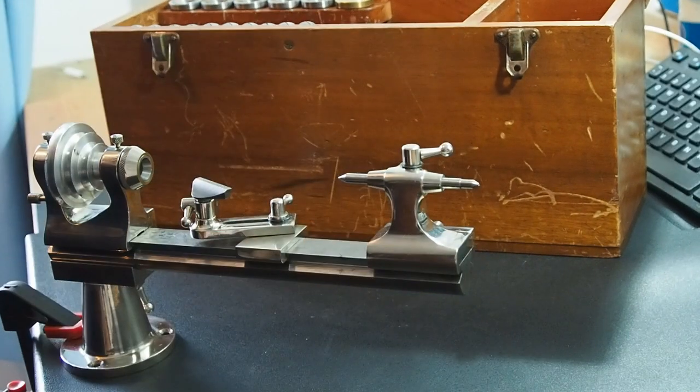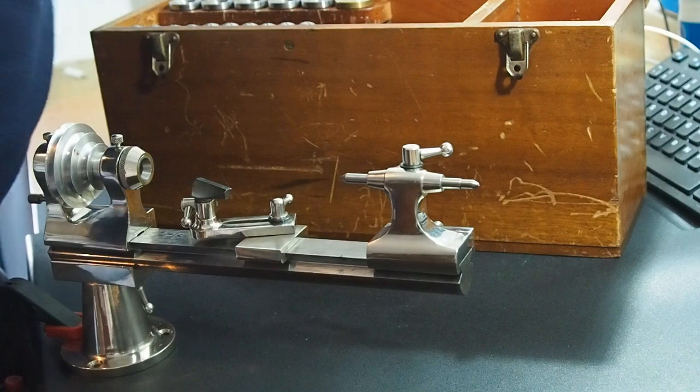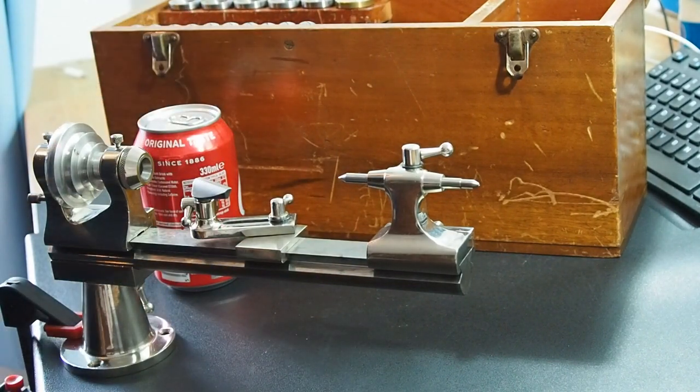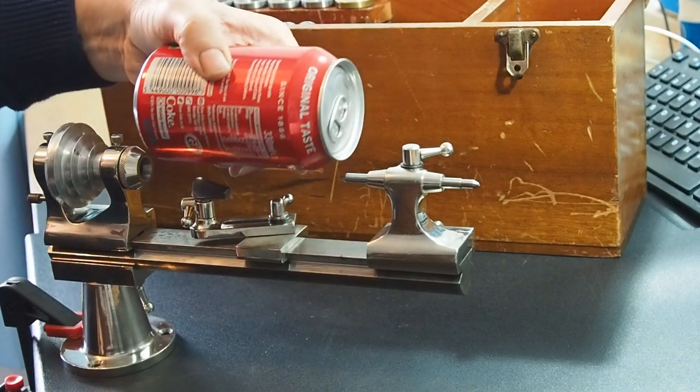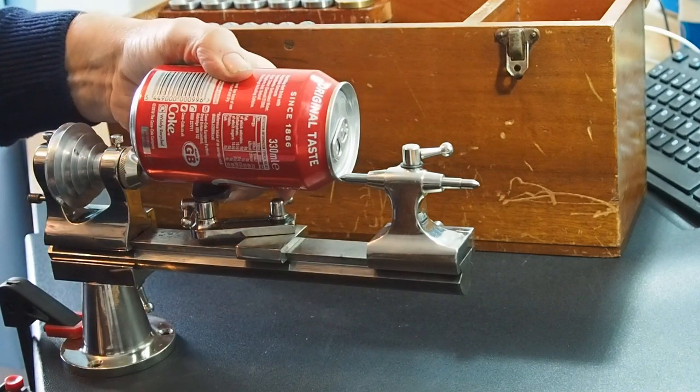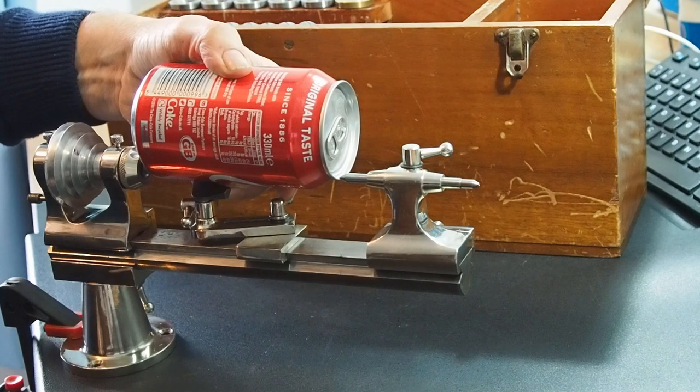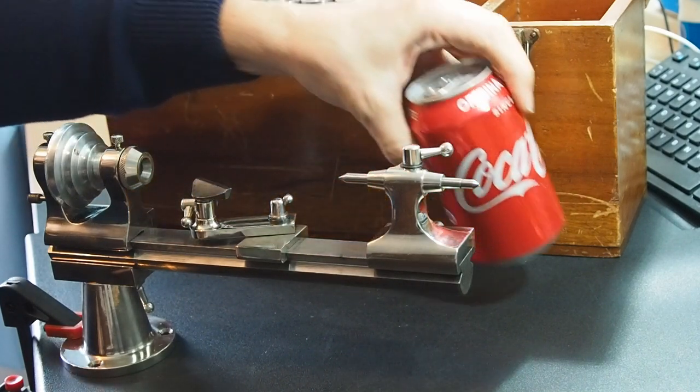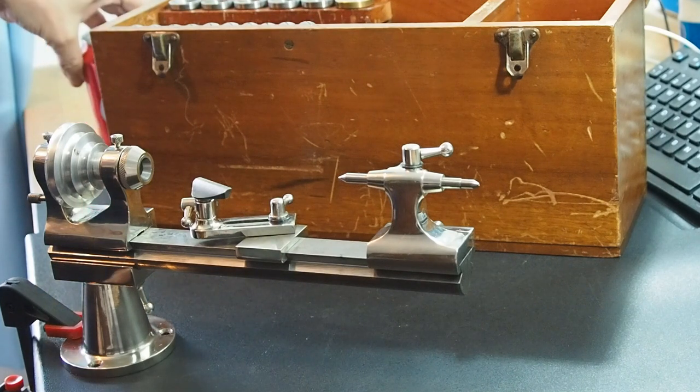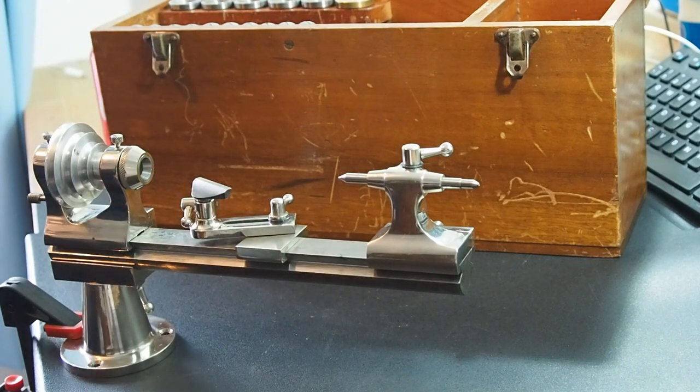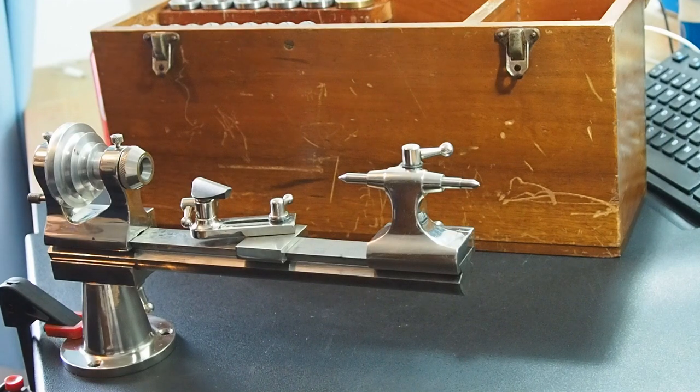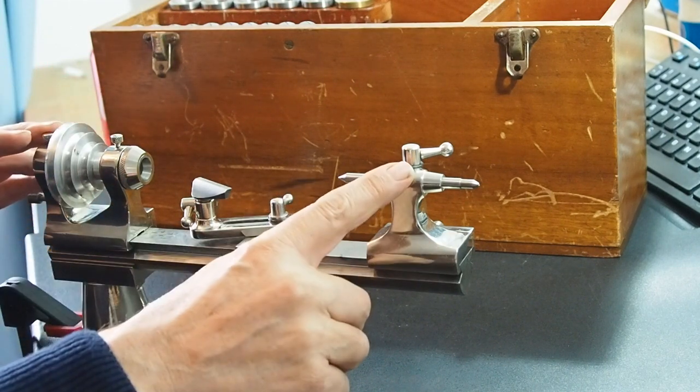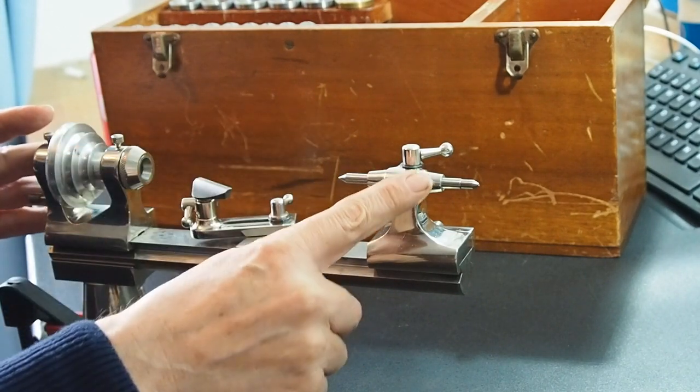So we've got a tailstock. If I just reach for the can of coke, as always, give you a good 330 ml can of coke. That pretty much is the distance between centers, even smaller than the Unimat. It was definitely not something I was really planning on going for.